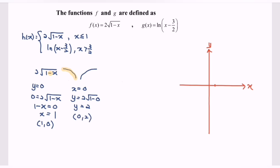So we have the point (1, 0) and the point (0, 2) plotted. Sketch the graph — that will be the graph for the function f(x), with the point (1, 0) and the point (0, 2) labeled.